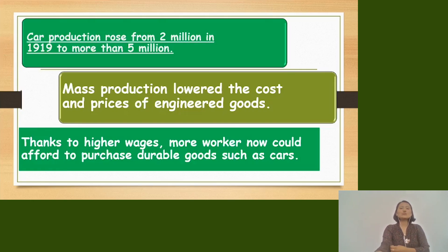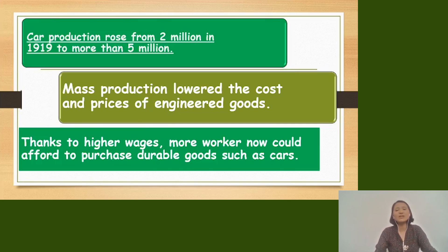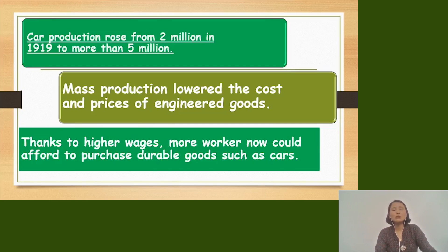Car production rose from 2 million in 1919 to more than 5 million by the early 1920s. Mass production lowered the costs and prices of engineering goods, including cars, making them more affordable.